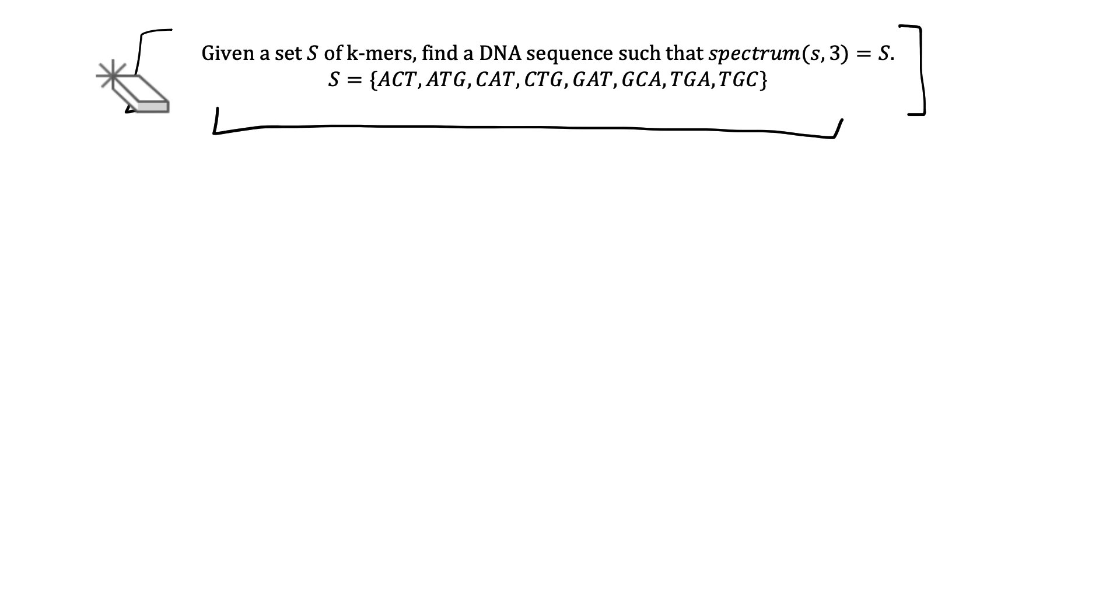That is an example problem that we're going to do in this video. Using this problem as a simplified version of what DNA sequencing would be like, it says given a set S of K-mers, find a DNA sequence such that the spectrum of S of 3 is equal to capital S.